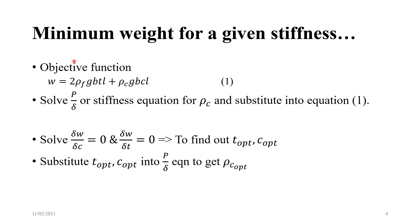To solve this problem, we start with the objective function, then solve the stiffness equation. We rearrange the maximum deflection expression to get P over delta, which is the stiffness equation. We solve the stiffness equation for rho_C and substitute it back, bringing in P and delta terms. Once the objective function is ready, we partially differentiate it with respect to core thickness and face thickness to get the optimal face and core thicknesses. Substituting these back gives the minimum weight, and substituting into the stiffness equation gives the optimal core density.